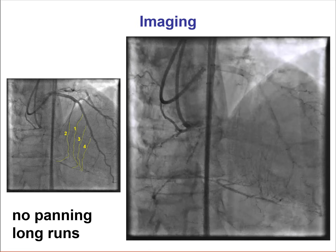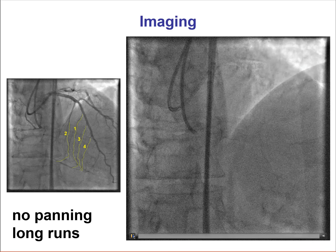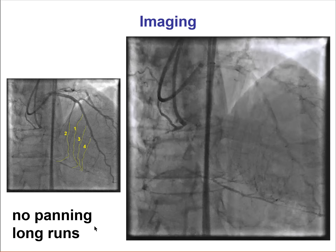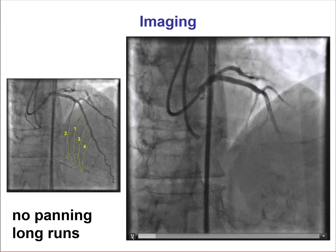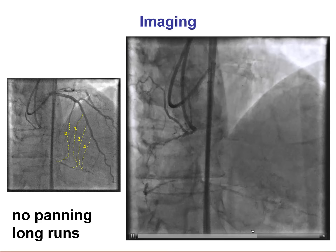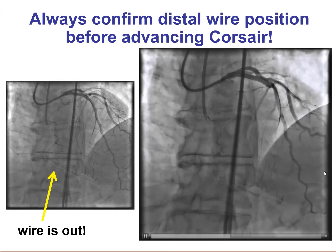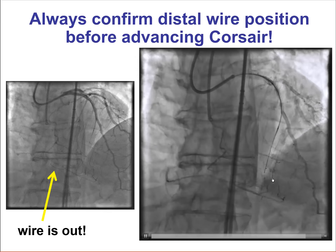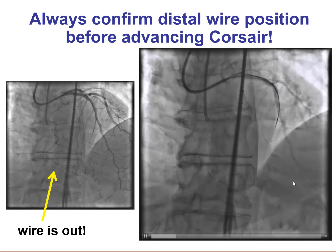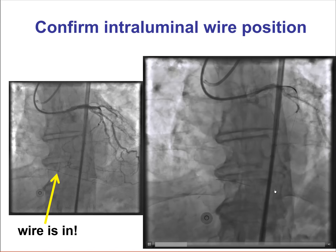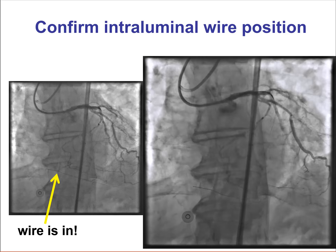This is an example of a dual injection for evaluating the collaterals in a patient with a right coronary artery CTO. This requires detailed evaluation and then grading of the collaterals in terms of ease of use. We try to appreciate which would be the best collateral to attempt first and what are the subsequent choices. This is the same patient during attempts to cross — the wire here is outside the vessel, which is important to know before advancing the Corsair. Once the wire is repositioned, it is now in the distal true lumen, and we can proceed with crossing the collateral with the Corsair.